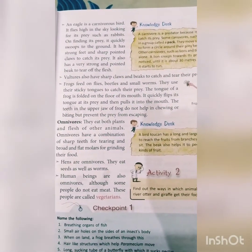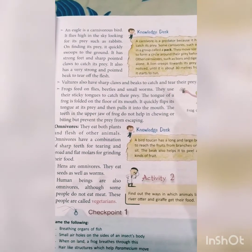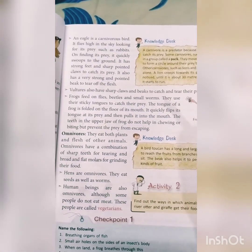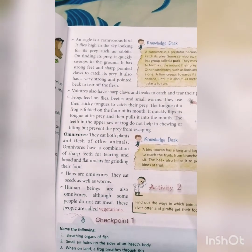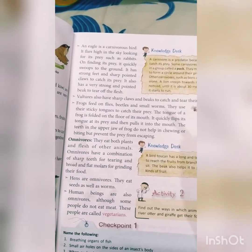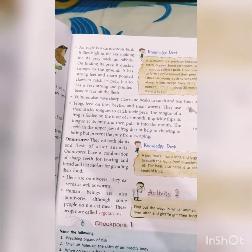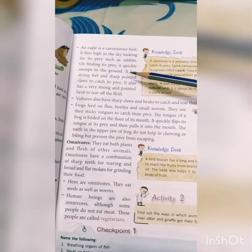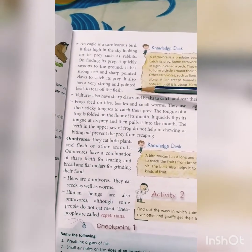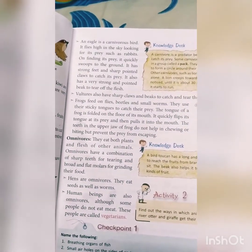An eagle is a carnivore bird. It flies high in the sky looking for prey such as rabbits. On finding its prey it quickly swoops to the ground. It has strong feet and sharp pointed claws to catch its prey, and a strong pointed beak to tear off flesh. Vultures also have sharp claws and beaks to catch and tear their prey.